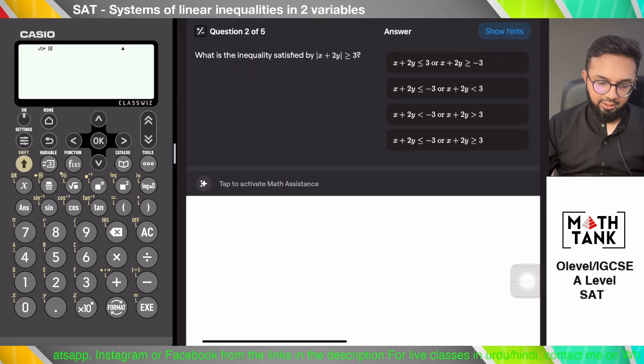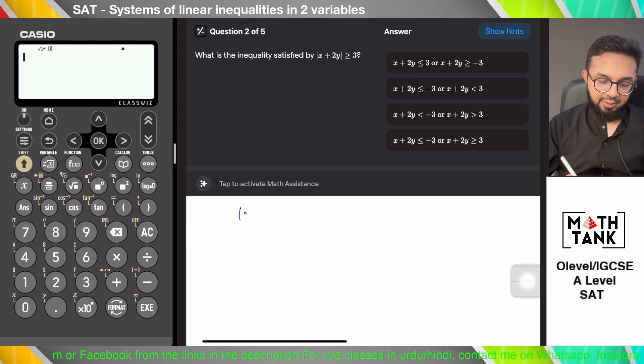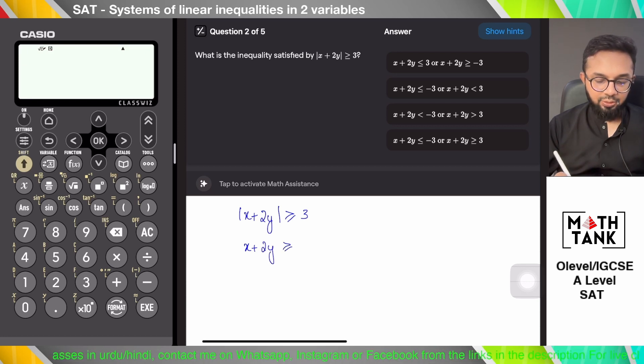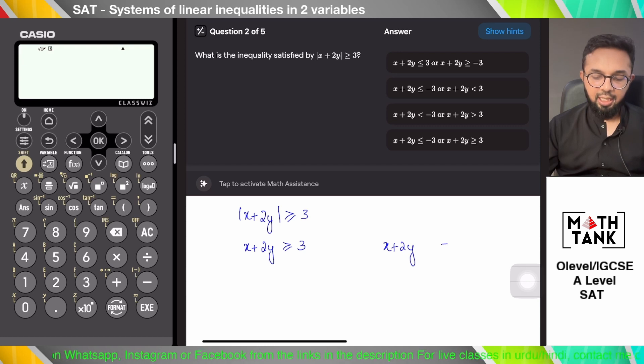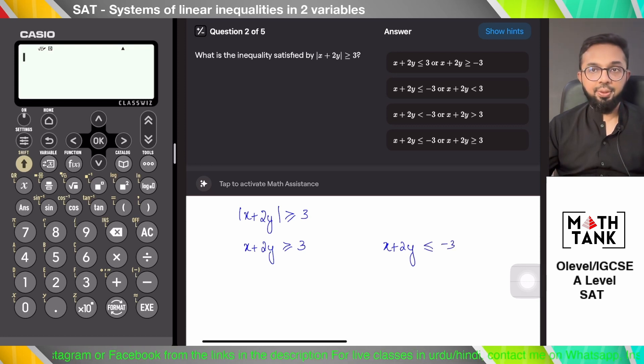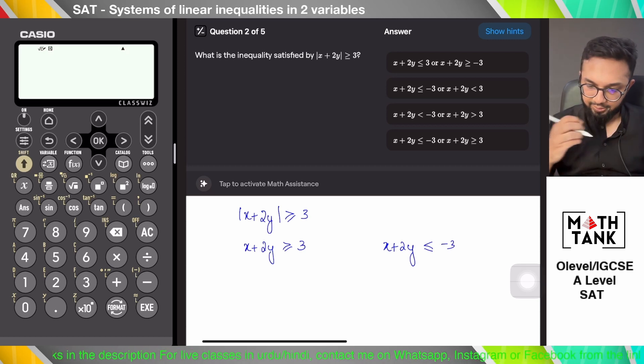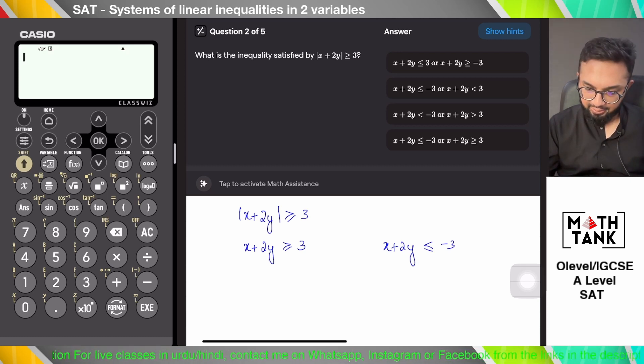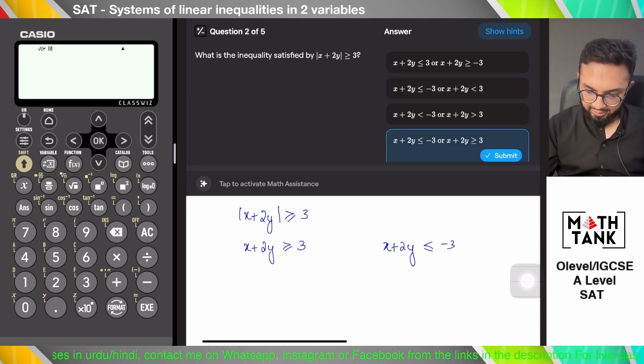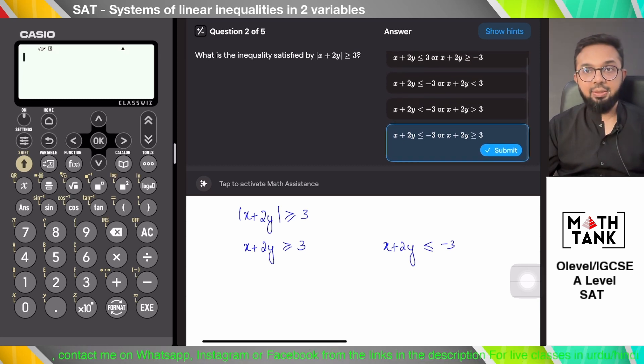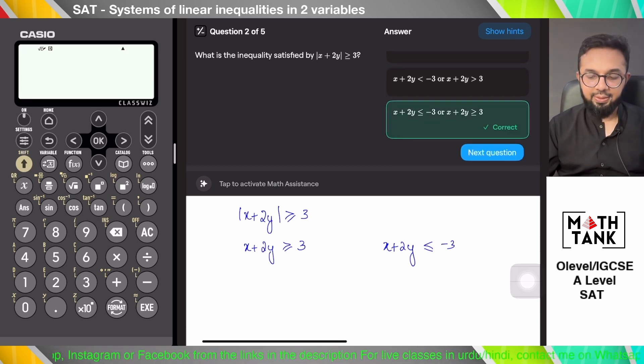What is the inequality satisfied by this? Remember that whenever you remove a modulus, you have two situations. One with the plus, and remember that when you put a negative, this sign has to flip. So x plus 2y is greater than or equals to 3. Do I see that in an answer option? I see D, and it's x plus 2y is less than or equals to minus 3. So that's the correct answer there.